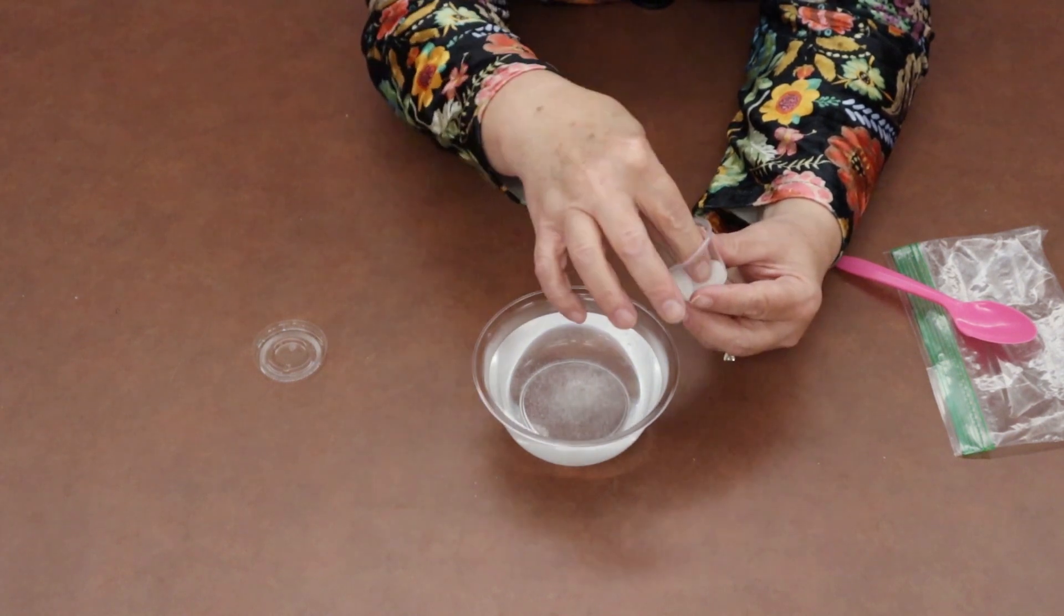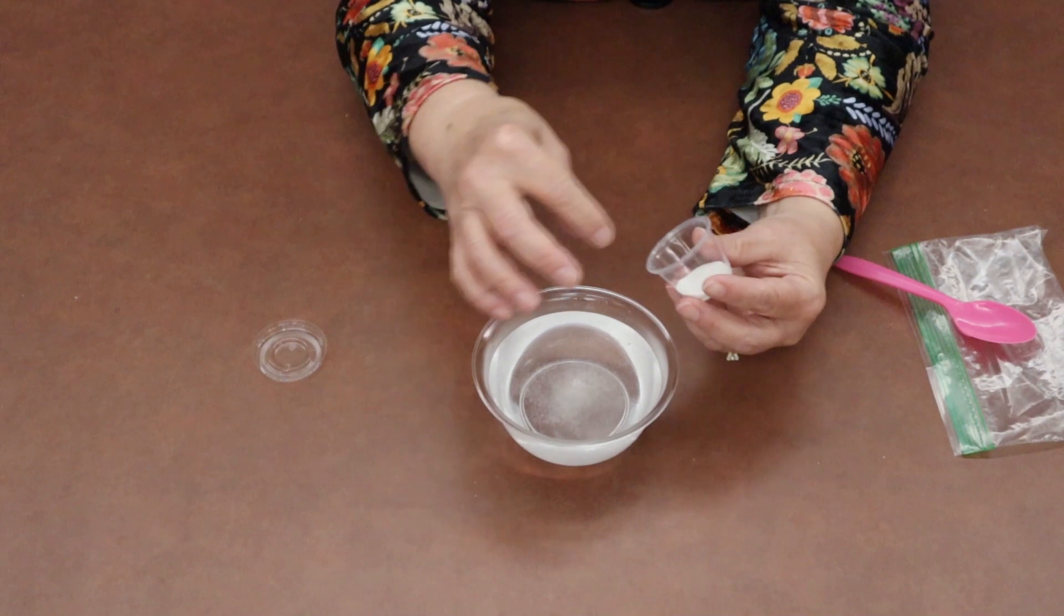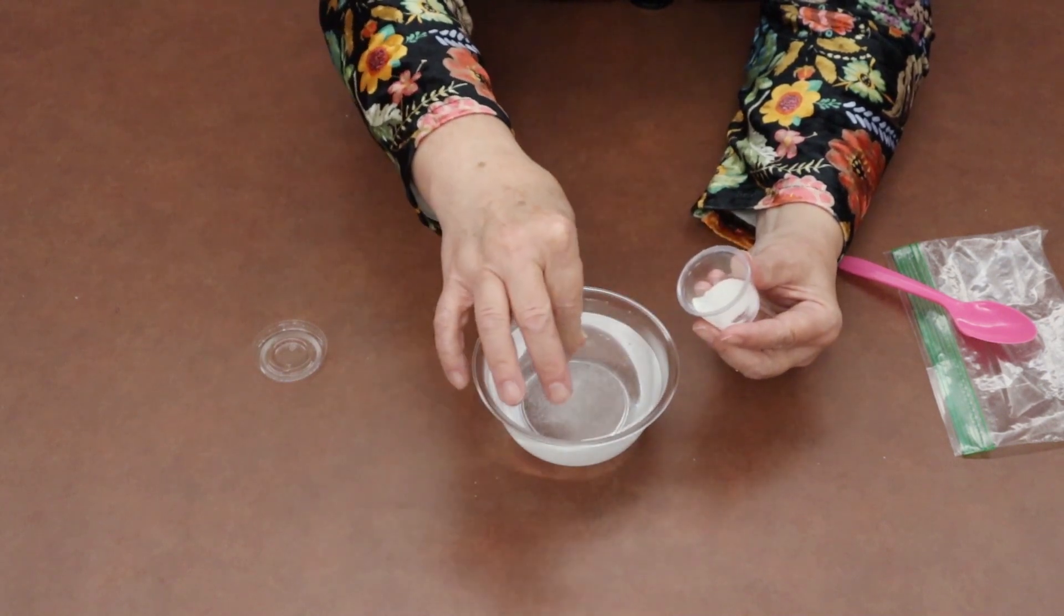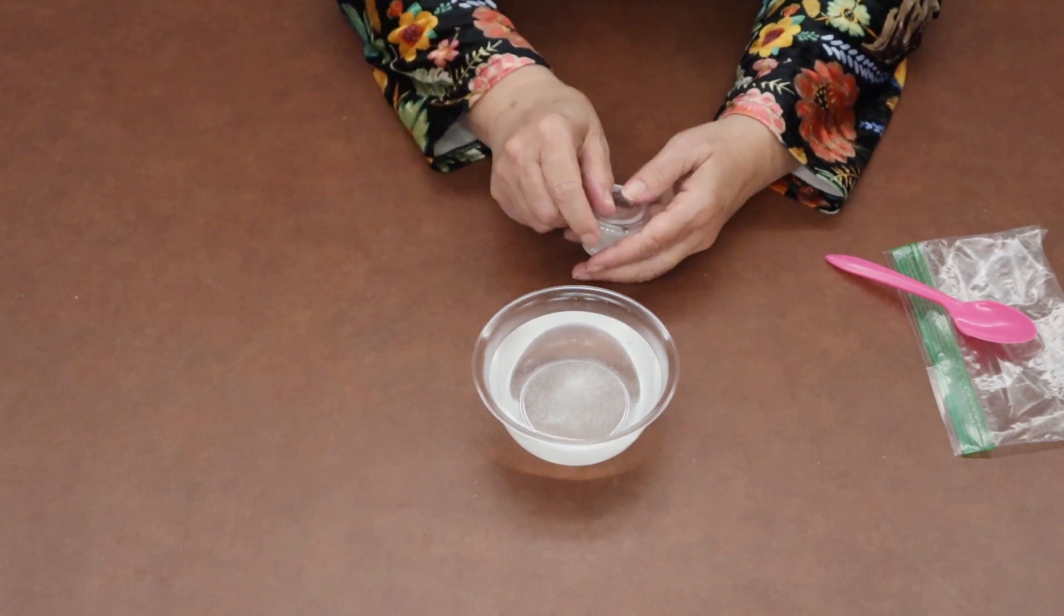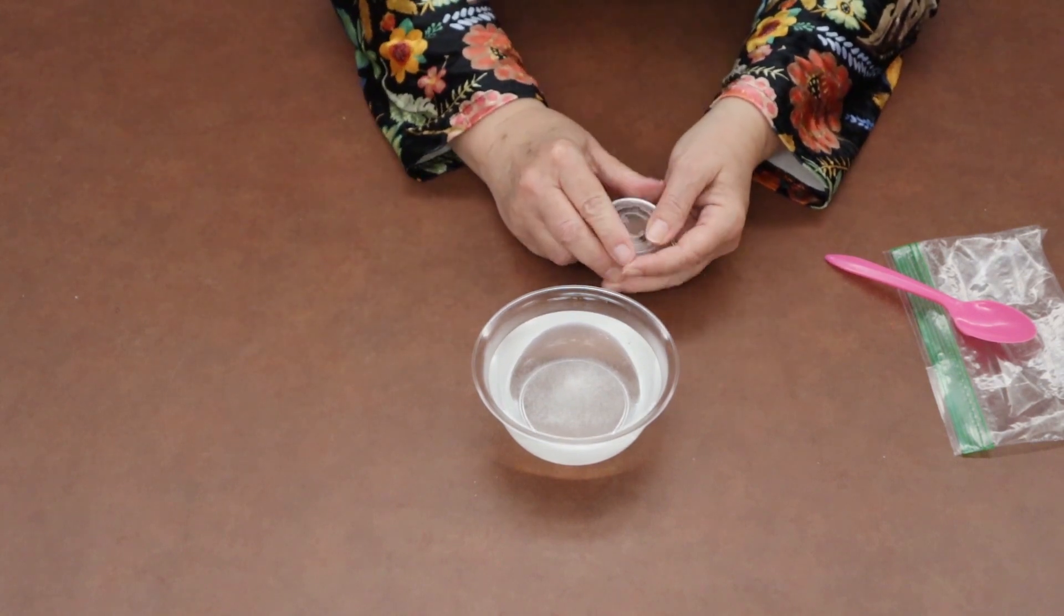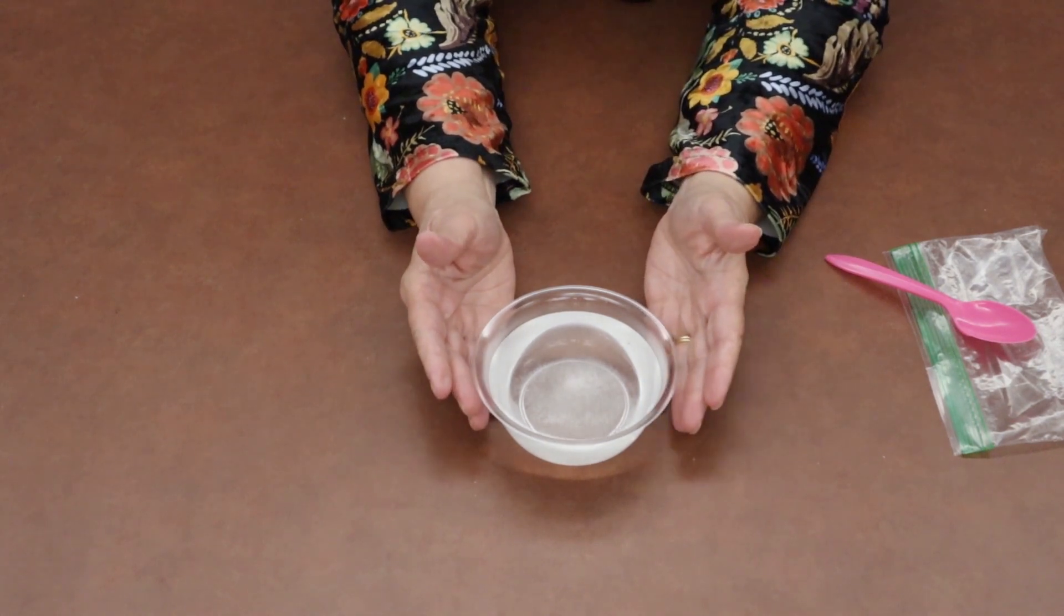So just sprinkle, sprinkle, sprinkle. If you choose to put the whole thing in, go ahead and do that, but you don't need to stir it at this point. What you will do is take your bowl of Epsom salt and water and sand and food coloring if you're using it, and put it in your refrigerator.